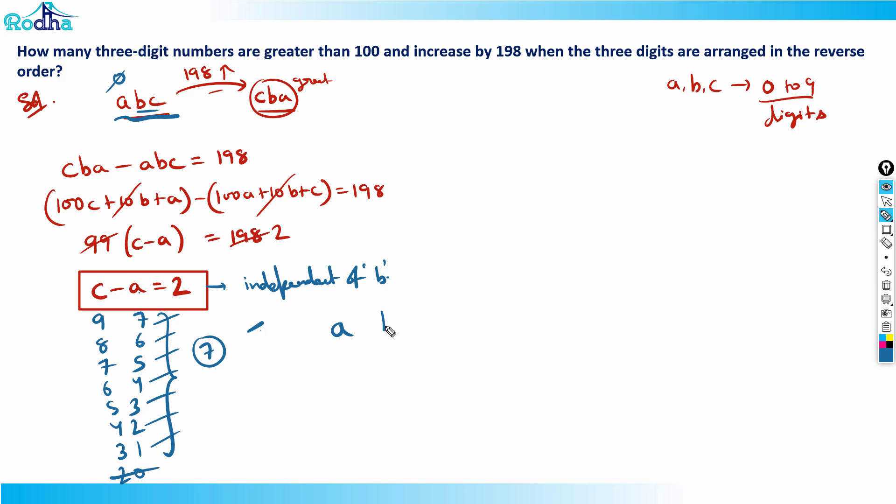For example, if a is 7 and c is 9, then it is independent of b. That means b can take all ten values: 0, 1, 2, 3, till 9. For example, my number is 709. If the number is 709, its reverse is 907 and it increased by 198 - that's what we were searching for. If my number is 719, then its reverse is 917 and it still increased by 198. You can see the difference of 198 here: 719 to 917, difference of 198, and it goes on like this.